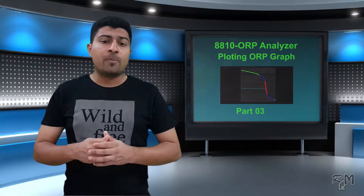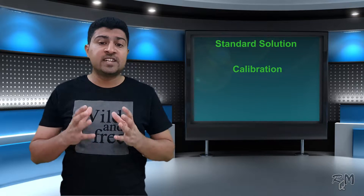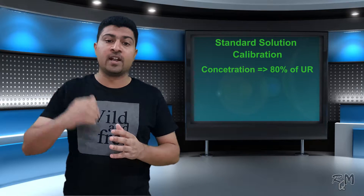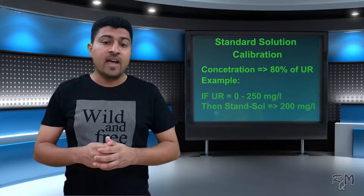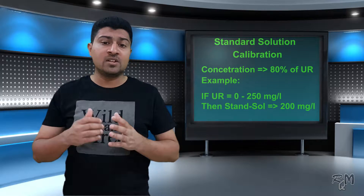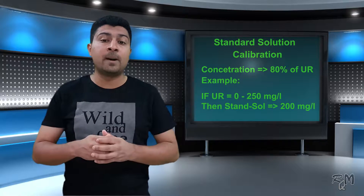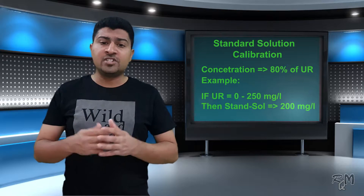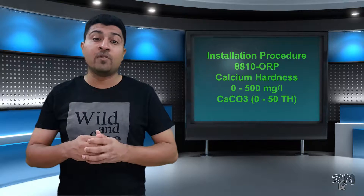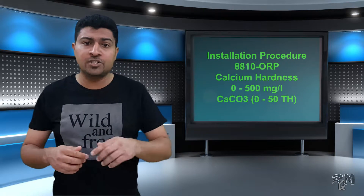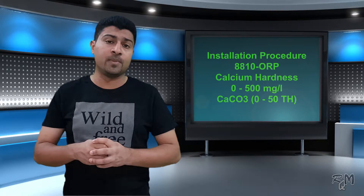First we will perform standard solution calibration. For this purpose we need a standard solution of calcium whose concentration should be at least 80% of the upper range of the analyzer. For example, if the analyzer working range is from 0 to 50 mg per liter, then calibration solution concentration should be 200 mg or more for proper calibration. The preparation procedure of calcium standard solution, reagents, and cleaning solutions are mentioned in the installation manual of the 8810 ORP analyzer. If you want this document, find the link in the description and you can download it from there.